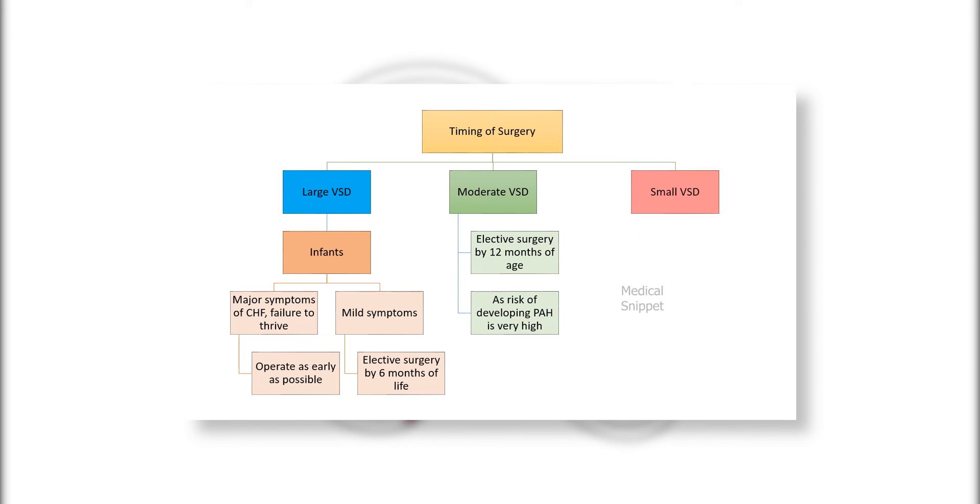Young patients with small VSD are usually kept under observation. Surgery is indicated if they develop complications like infective endocarditis or aortic regurgitation. Surgery is contraindicated in patients with Eisenmenger complex.